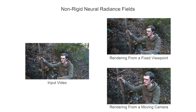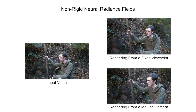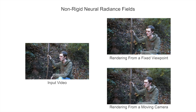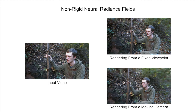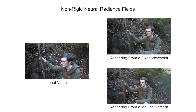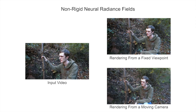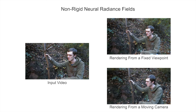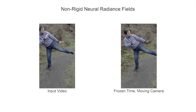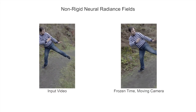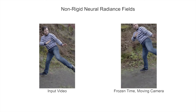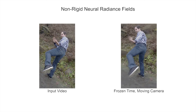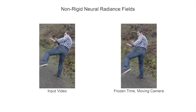Once trained, we can re-render any time step from an arbitrary camera view. This allows us to render the entire sequence from a fixed novel viewpoint, or make the camera follow a specific trajectory. Furthermore, we can smoothly move the camera and freeze time of a casual recording to create a bullet time effect.